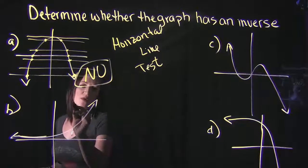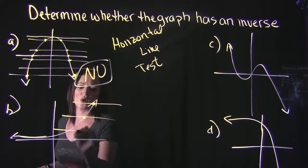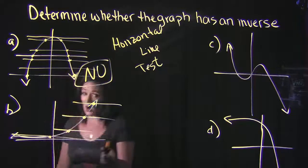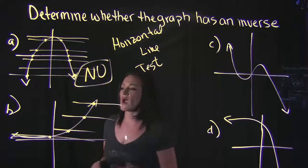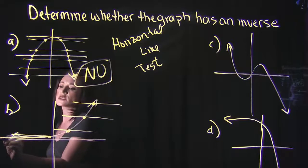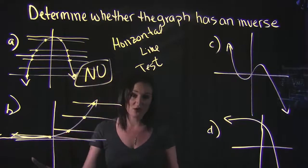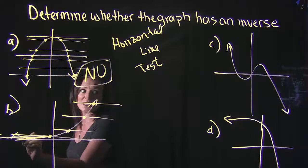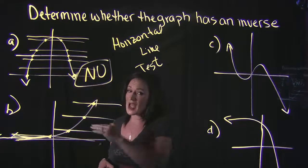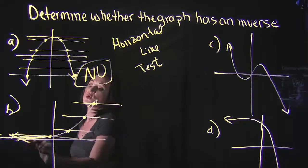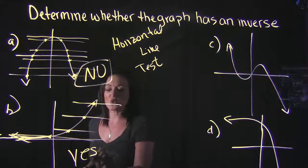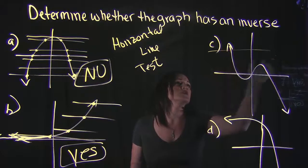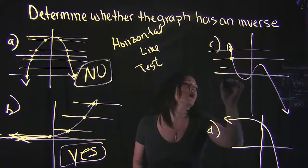Looking at Example B: a line here crosses once, crosses once, crosses once — even all the way down, it's still only crossing at one point. You have to be careful with graphs like Example B because the bottom looks like it almost completely straightens out, but it's not going completely straight — it's going down just a tiny bit at a time, still curving down. So yes, this only crosses at one point, meaning yes, it does have an inverse function.